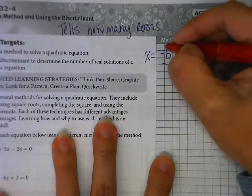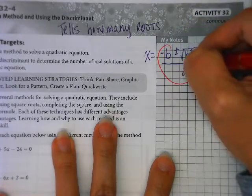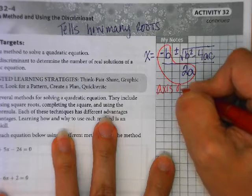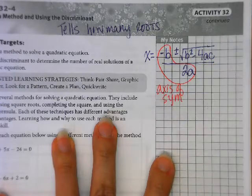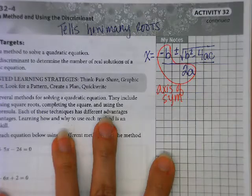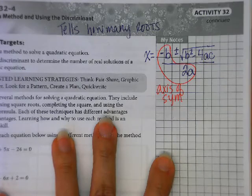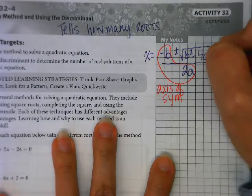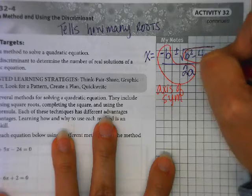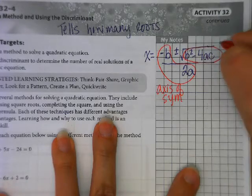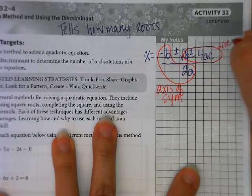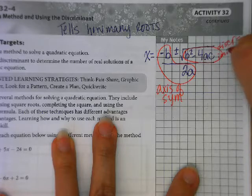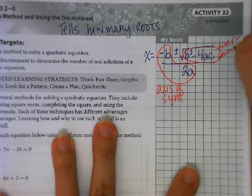This part right here, negative B over 2A, this was our formula for our axis of symmetry. You've done that. Remember, we found out what X was, and we plugged it in, and we got Y to get our vertex. We are going to focus on this piece today. This is called the discriminant.